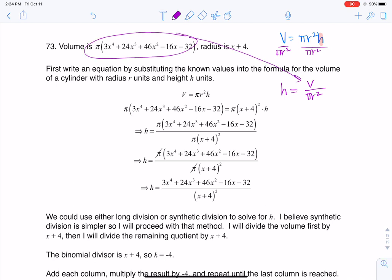They gave me an expression for my volume, so I'm going to substitute that in here. They gave me an expression for my radius, so I'm going to substitute that in there, and then I'm going to solve for my height. I took this expression for volume, wrote it in the volume slot, took this expression for radius, wrote it in the radius slot, and then I isolated the height.